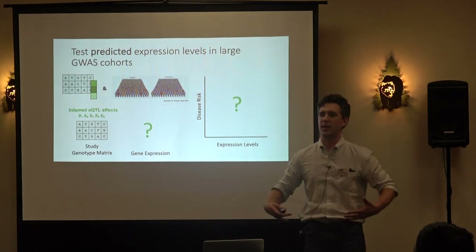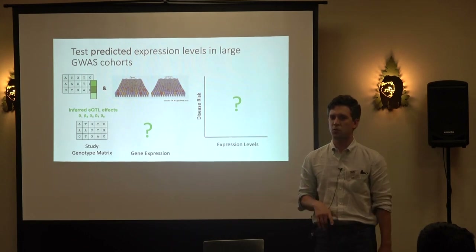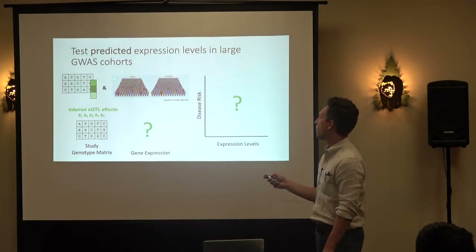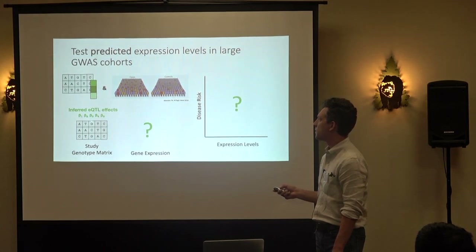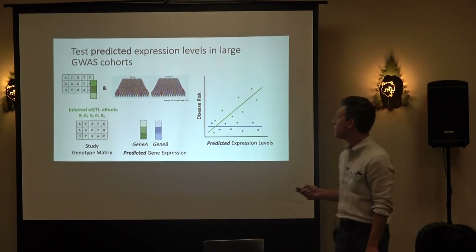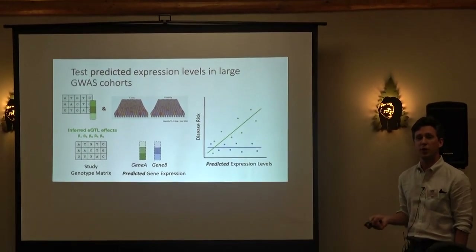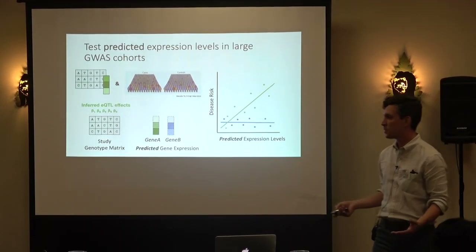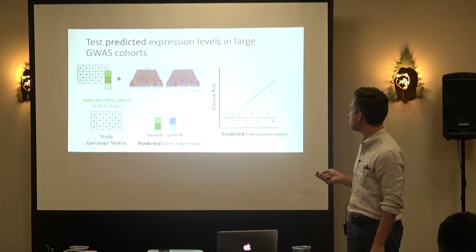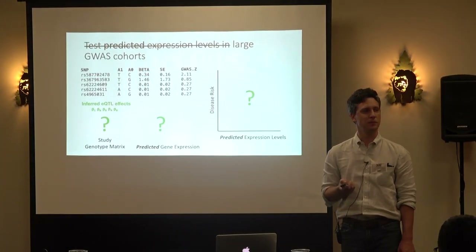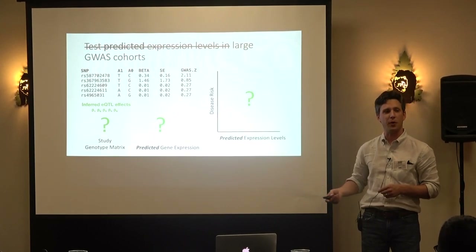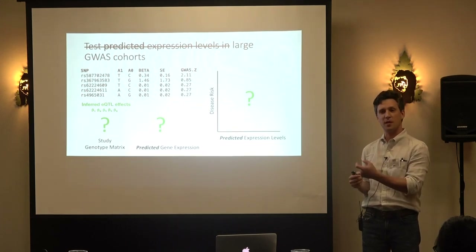So equipped with this approach, we have our reference panel, measured expression, trained predictive models, and our cases and controls. We have the weights and the GWAS genotype matrix — we predict gene A, do the same for gene B, and see whether the predicted gene expression tracks with disease outcome. The way this procedure operates: we train models, get weights, and take those weights and apply them to individual-level data.